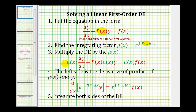Once we have the differential equation in this form, the left side is equal to the derivative of the product of our integrating factor mu of x and y. This left side equals that derivative, which is also equal to mu of x times f of x. Therefore this derivative equals our integrating factor times f of x. Once we have the equation in this form, we integrate both sides and solve for y.